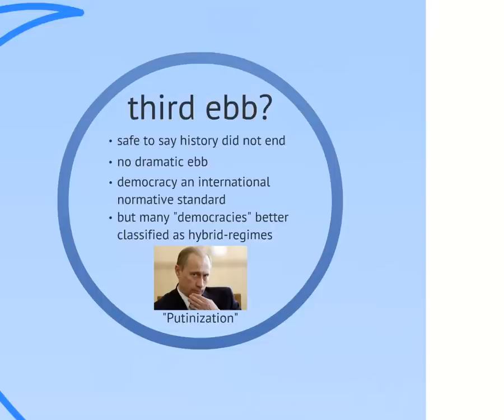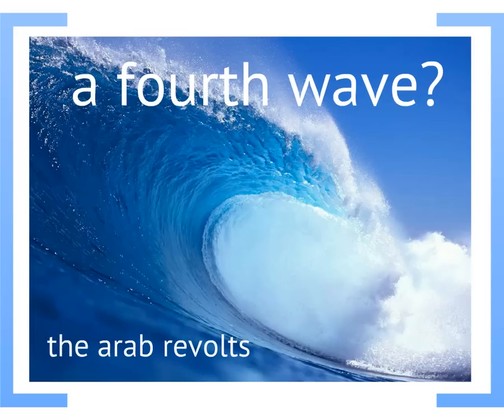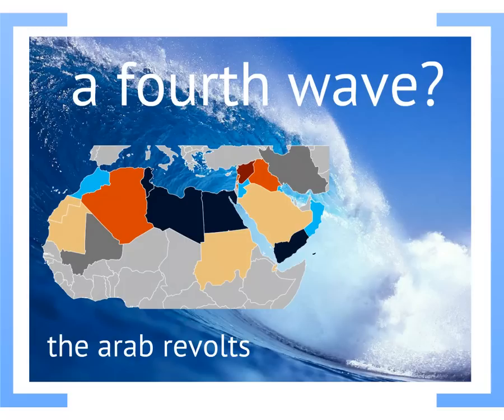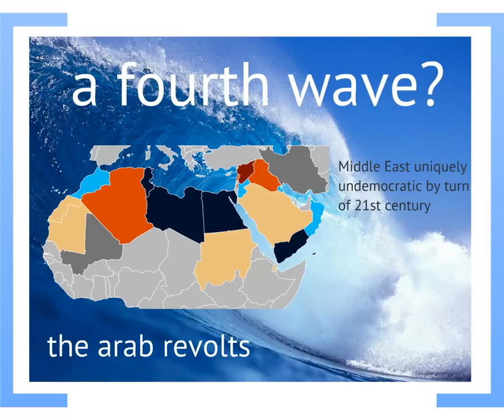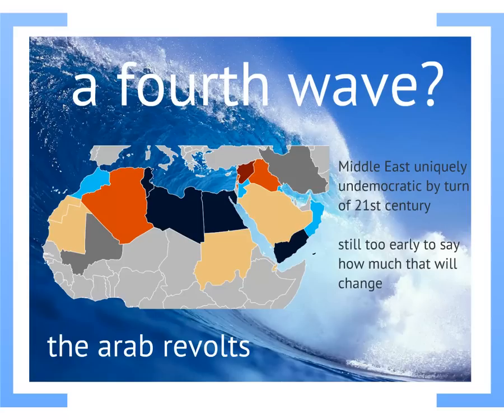We'll end this history of democracy lesson by reflecting on whether a fourth wave is breaking today. Will the Arab Revolt go down as a fourth wave of widespread democratization? You can see in this map of the Middle East and North Africa that pretty much every country has been shaded some color, indicating some sort of protest. The tan represents countries with some protest, bright blue shows protests met with significant government reforms, and black shows where protests led to the government being completely overthrown. It would be very significant for these countries to democratize because today the Middle East is still an amazing outlier for being the least democratic region. Still, it's far too early to say whether these countries are heading towards sustainable democracy or towards something else.